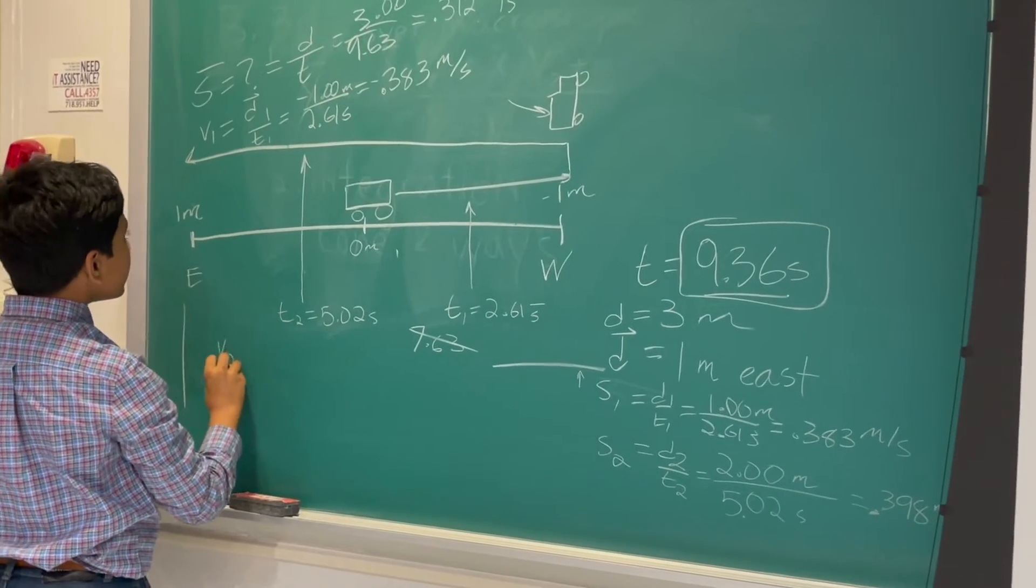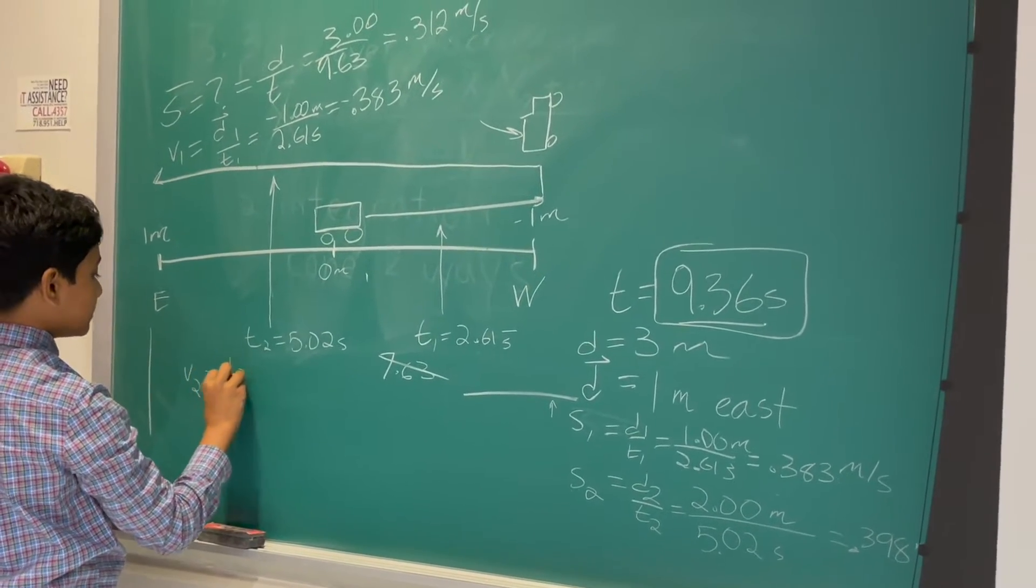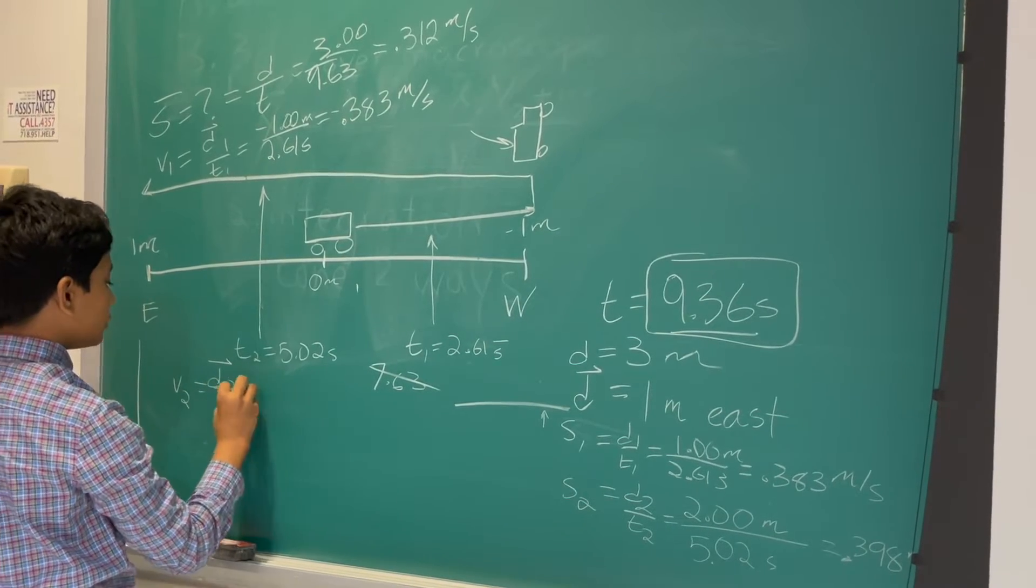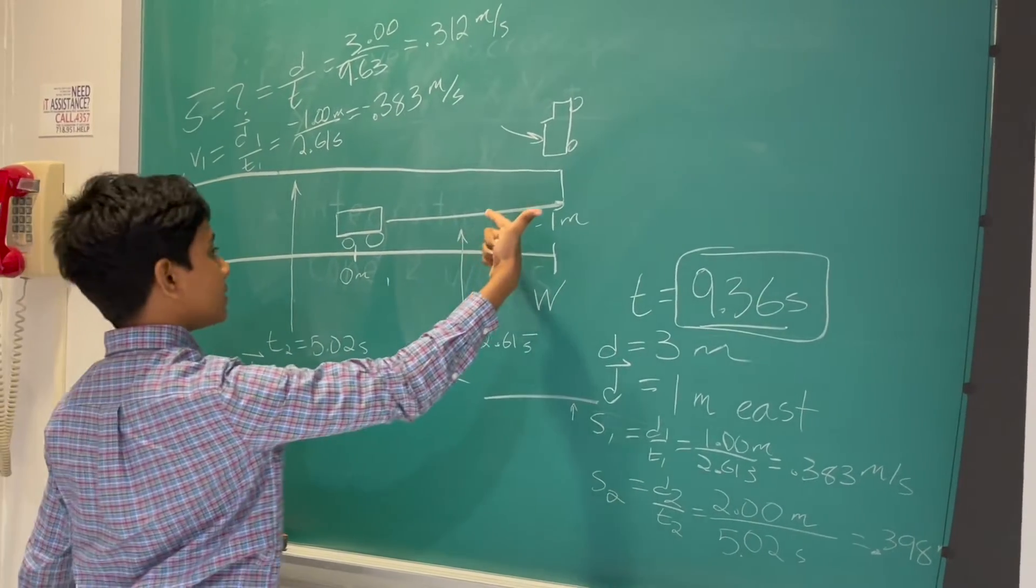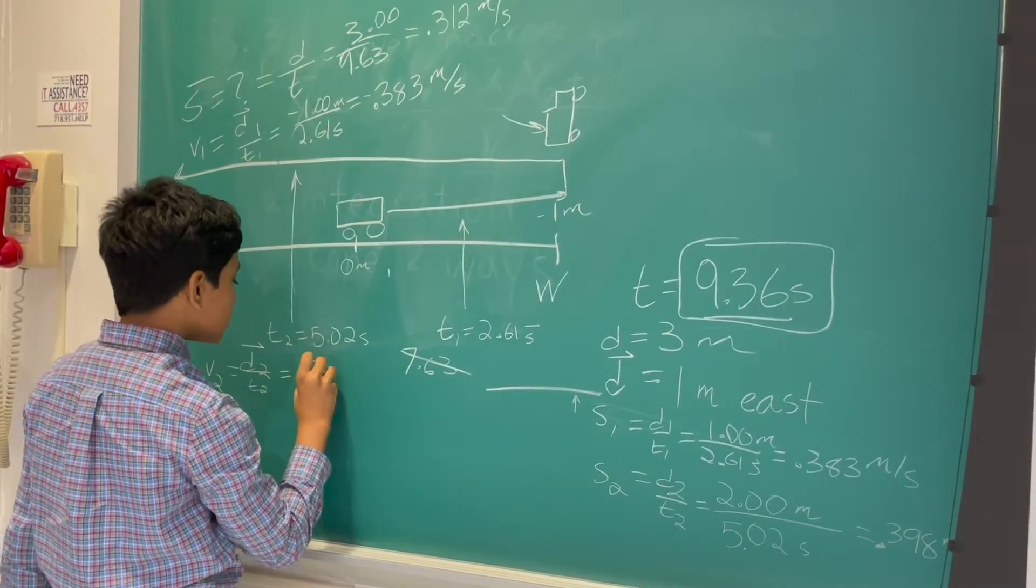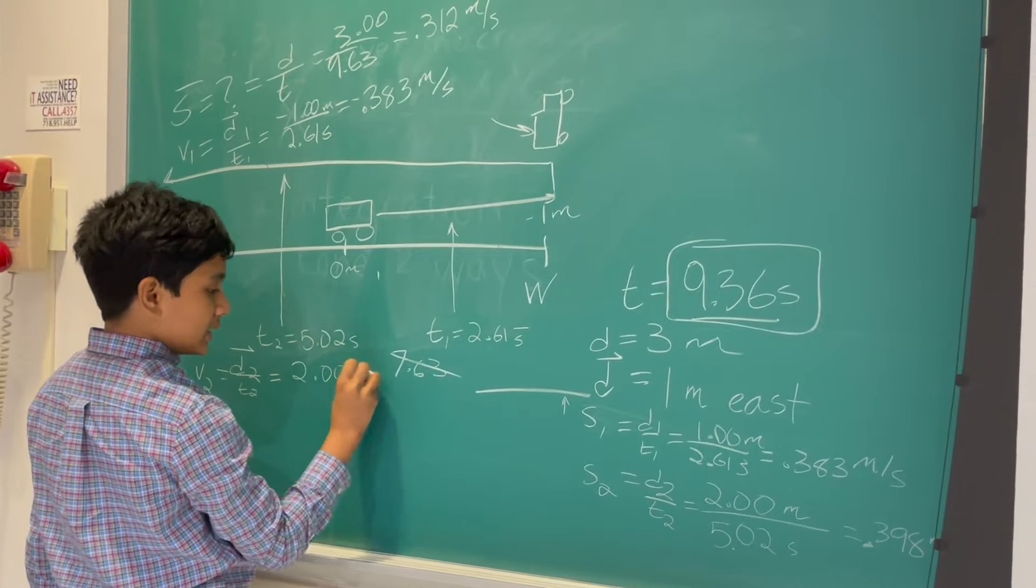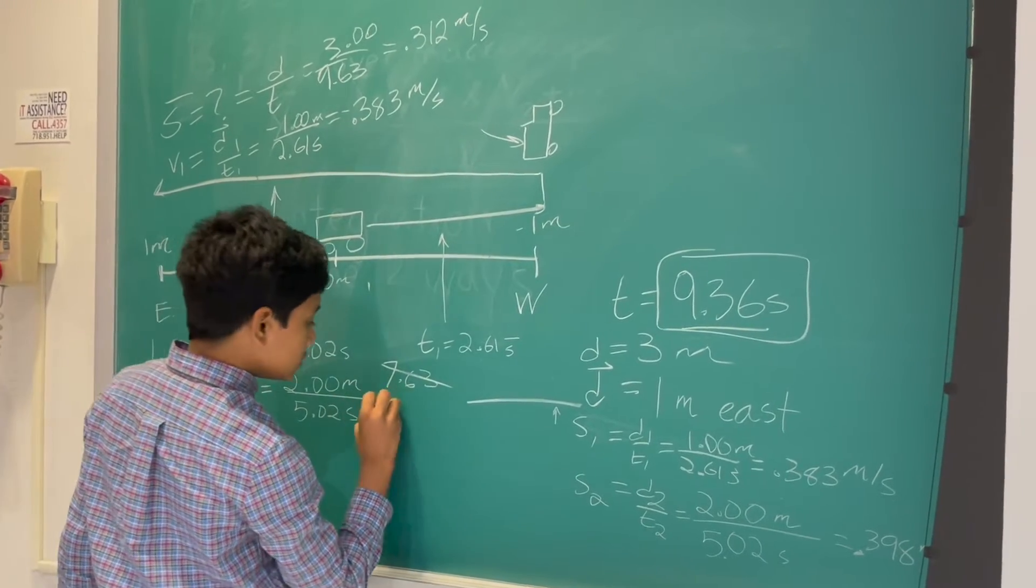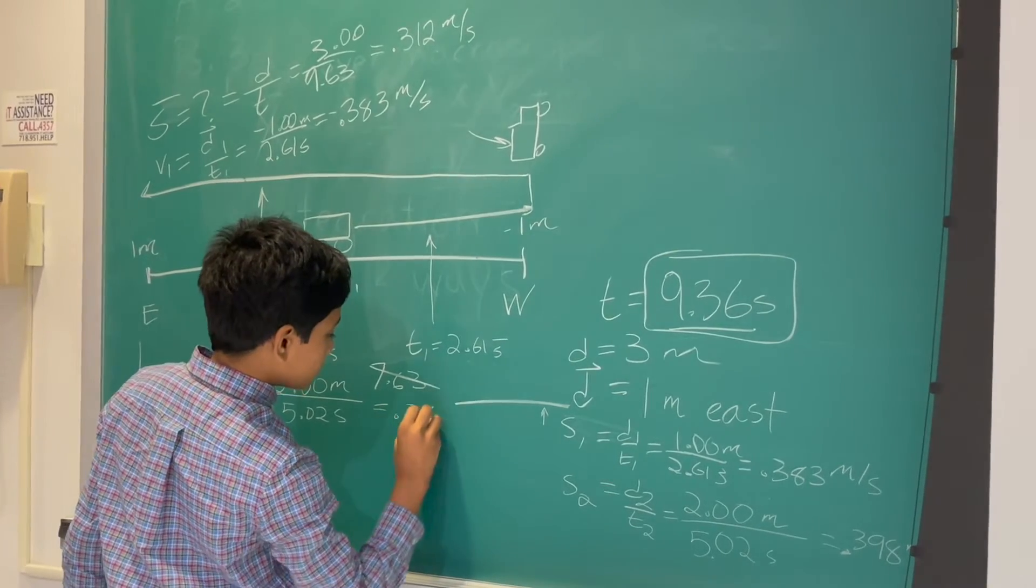V2, similarly, is going to be displacement 2 divided by time 2. And, since the second displacement was 2 meters in the eastern direction, it simply looks about the exact same as S2. So, it's 0.398 meters per second.